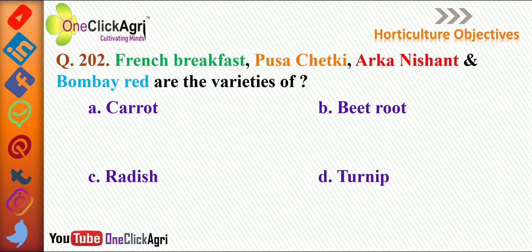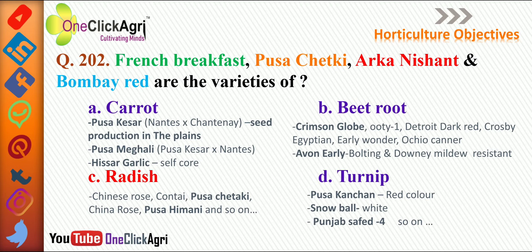French breakfast, Pusa Chetki, Arka Nishant and Bombay Red are the varieties of radish. Additional varieties include Chinese rose, Kontai, Pusa Chetki, China Rose, and Pusa Himani.